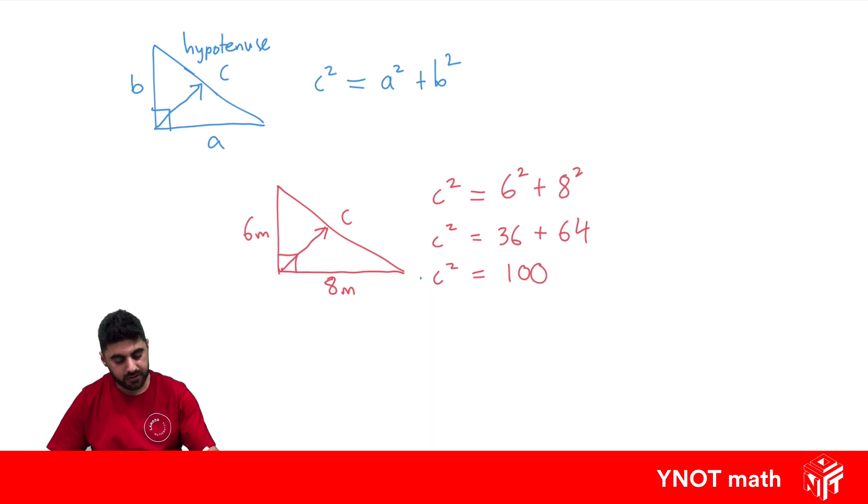So to solve for c, we have to square root both sides because that's the opposite of squaring something. That's how we get rid of the square and the square root. So we're left with c equals the square root of 100, which is 10 metres. So here the hypotenuse is 10 metres long.